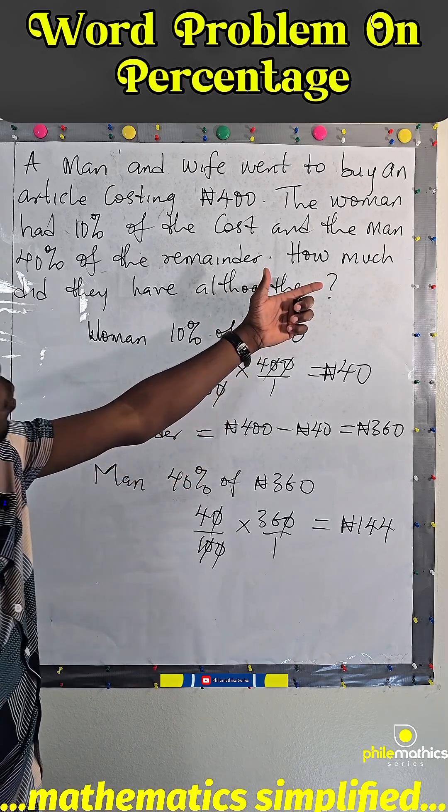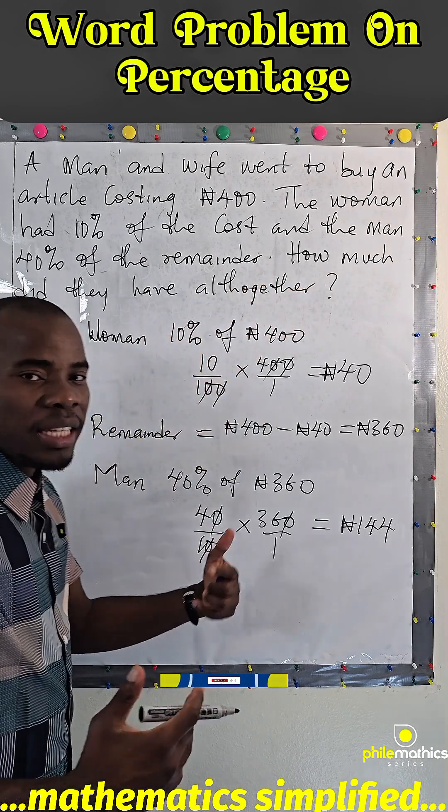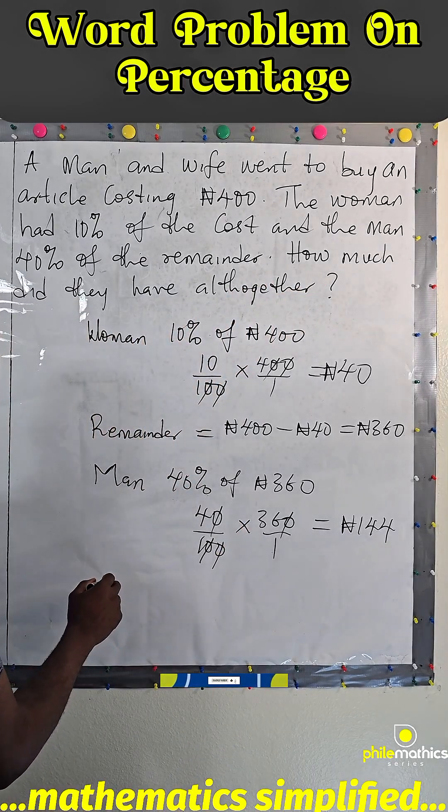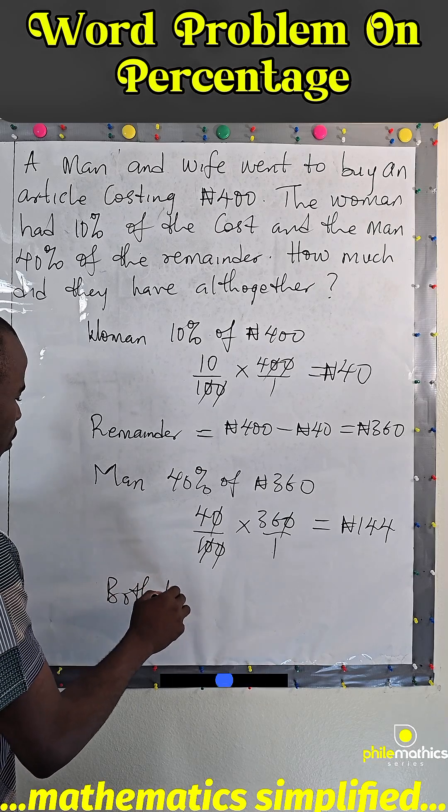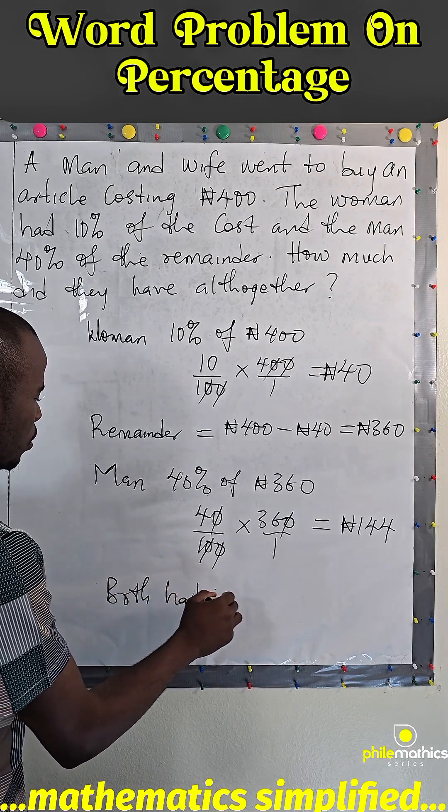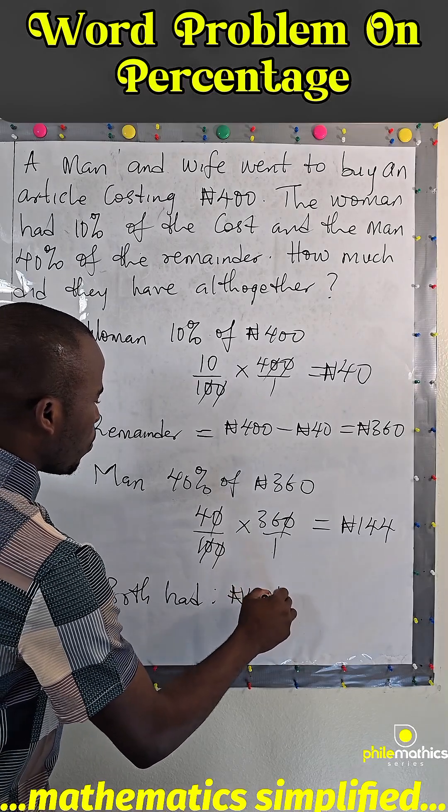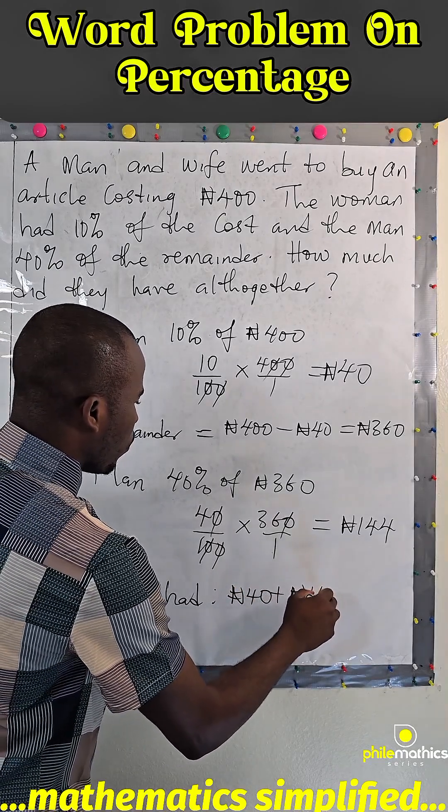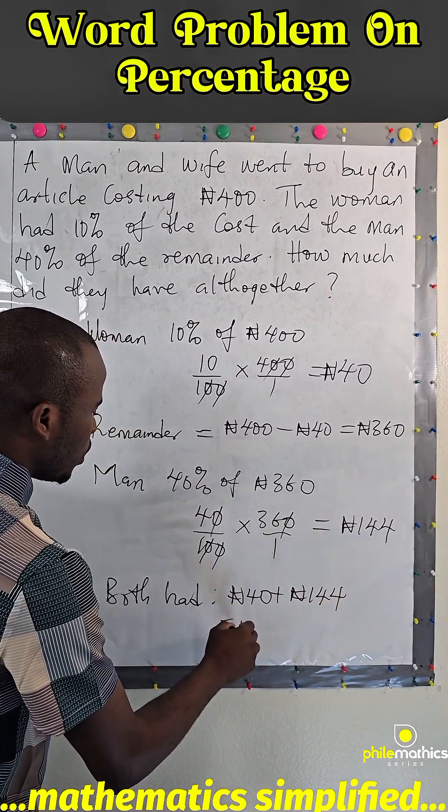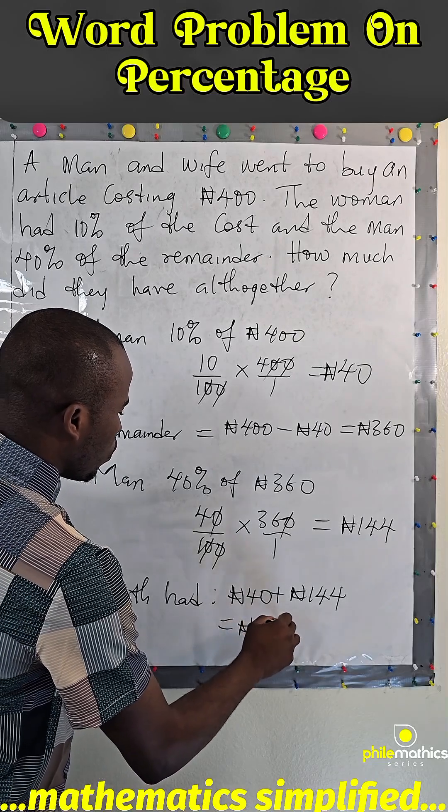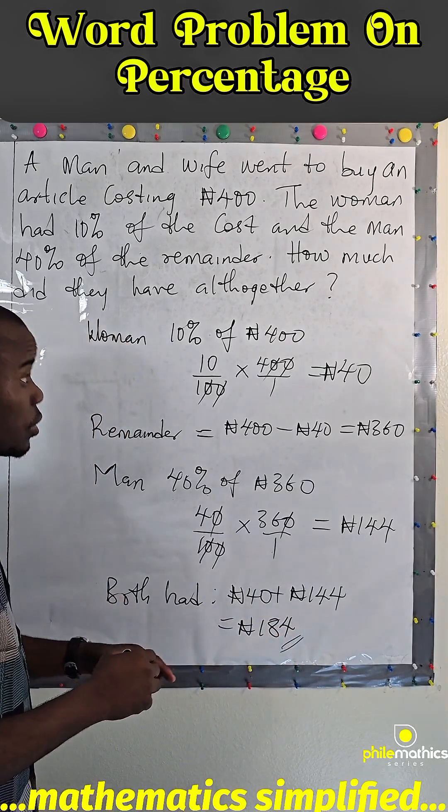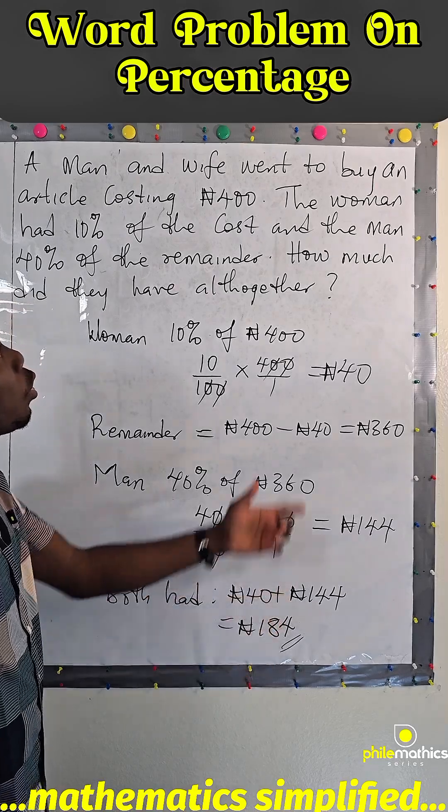So in total, we are asked to find how much did they have altogether. Both have ₦40 plus ₦144, which is ₦184. That means the money they had will not be enough to purchase the item.